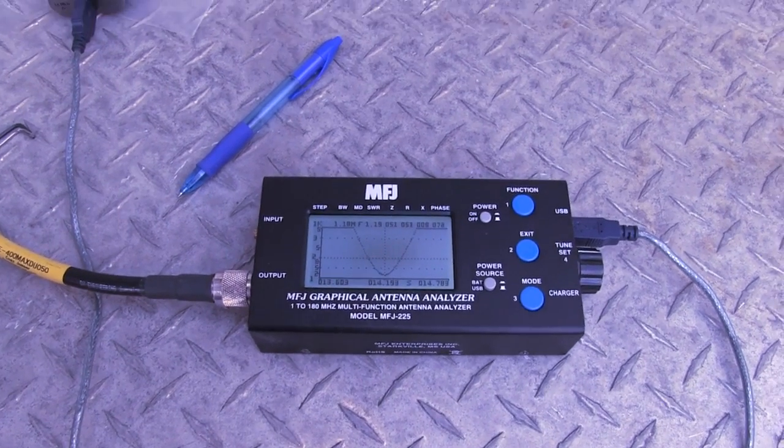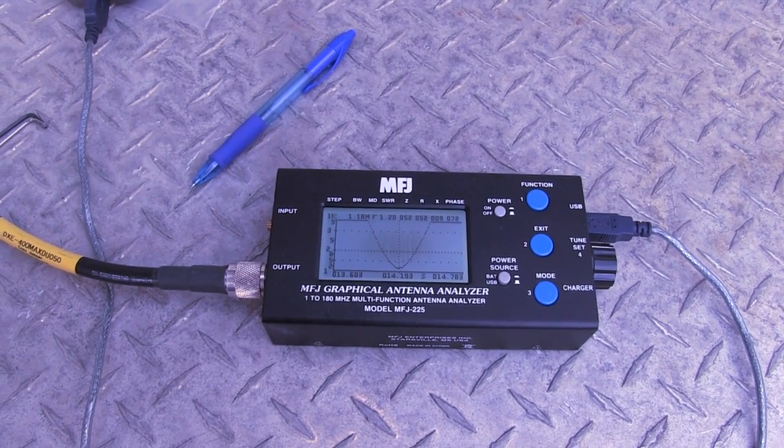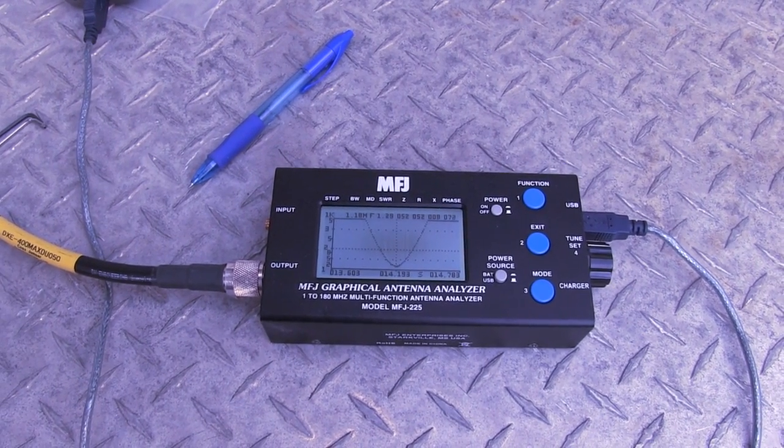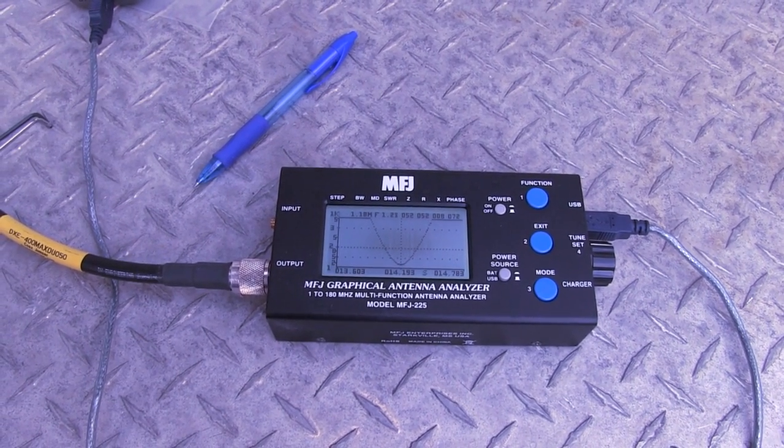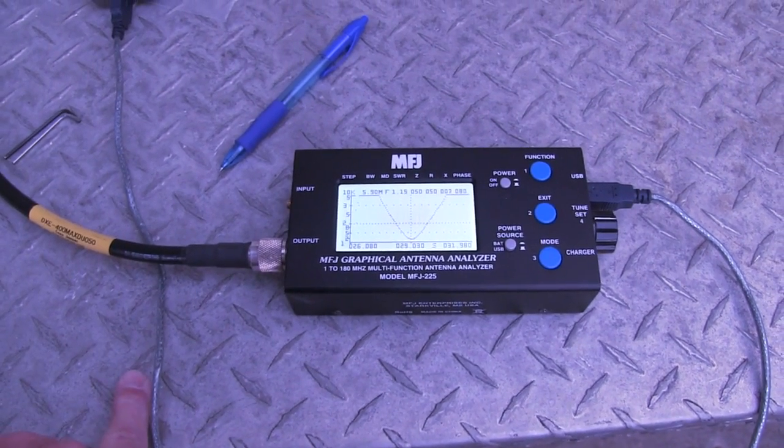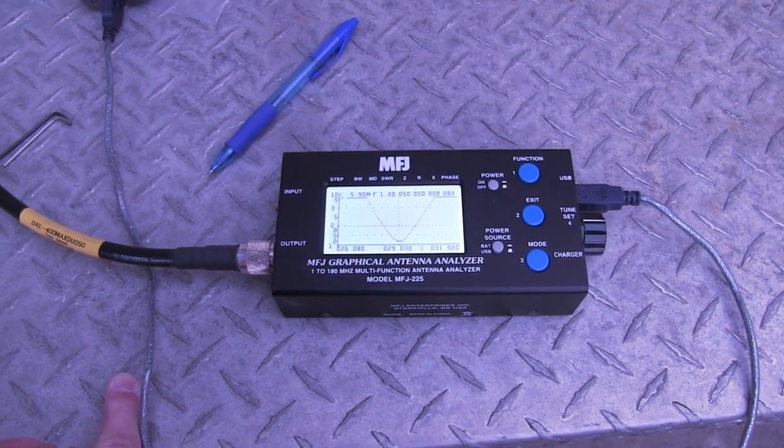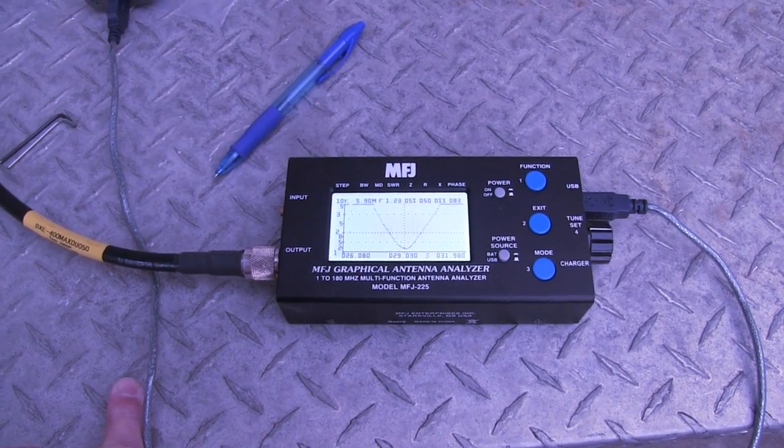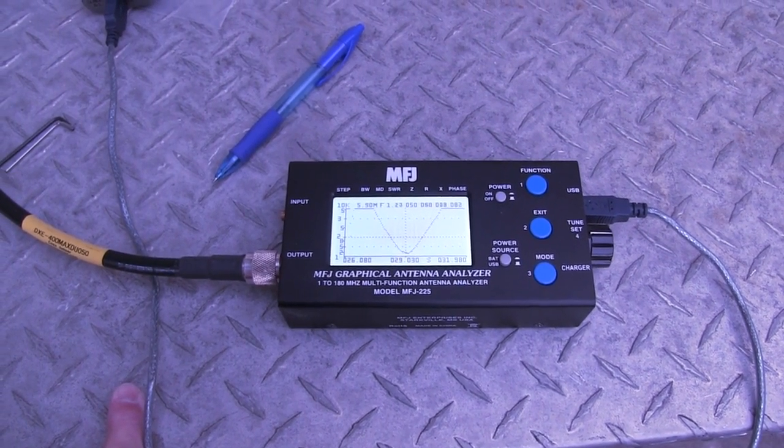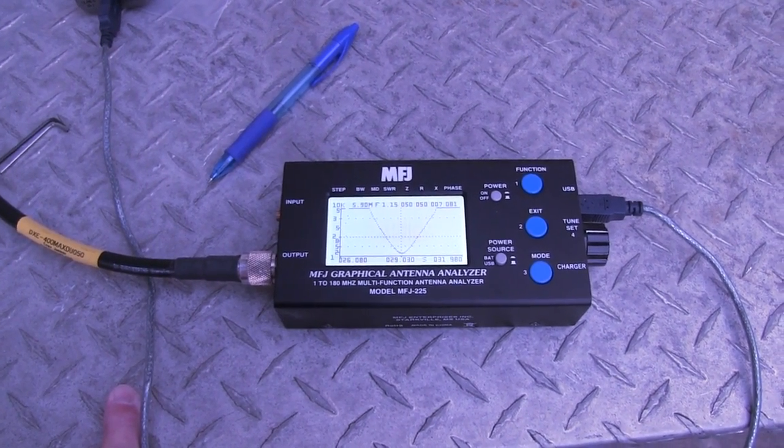I used my same method on the 20 meter band. I managed to get a good, nice dip there at 14193. The only band left now was 10 meters. Using the same procedure, I managed to get it at 29030, which is just about where I wanted it.